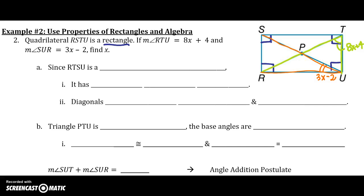And then we also are told that angle SUR, so that angle, is 3X minus 2. So we know since RTSU is a rectangle, we know a few things. We first know that it has four right angles, and that's by the definition. We've already shown that on our picture.